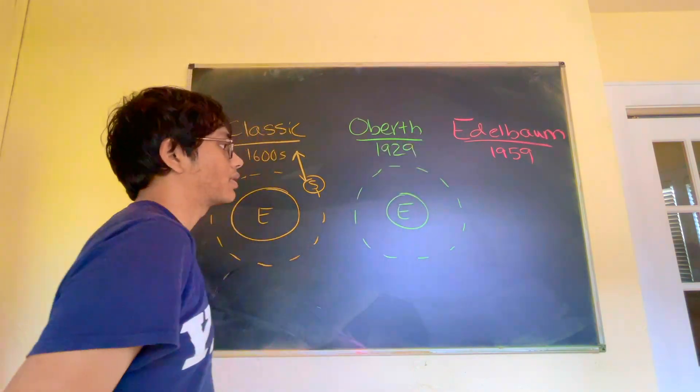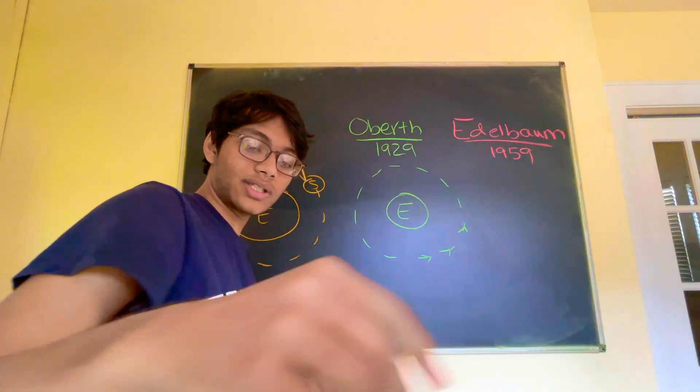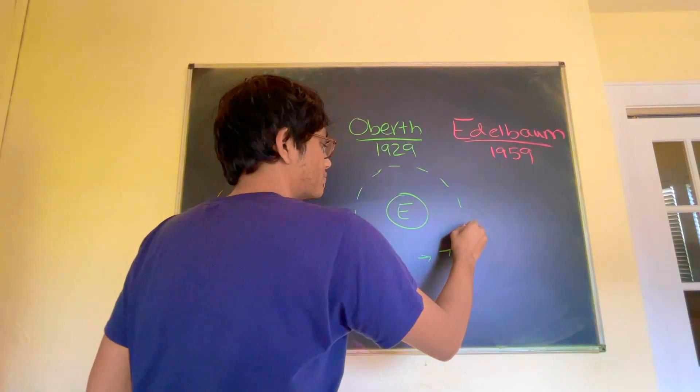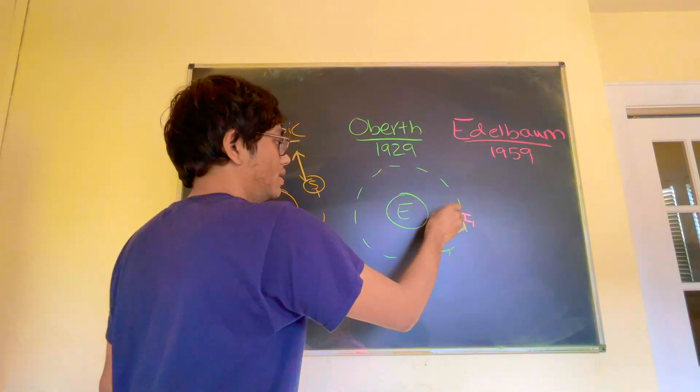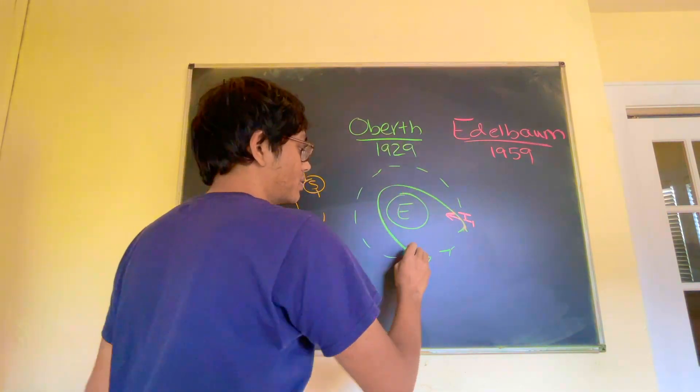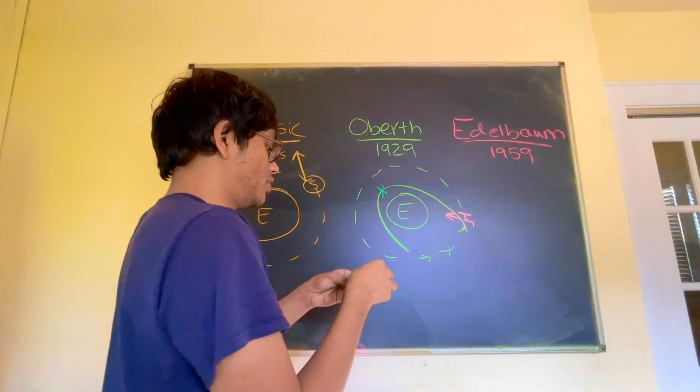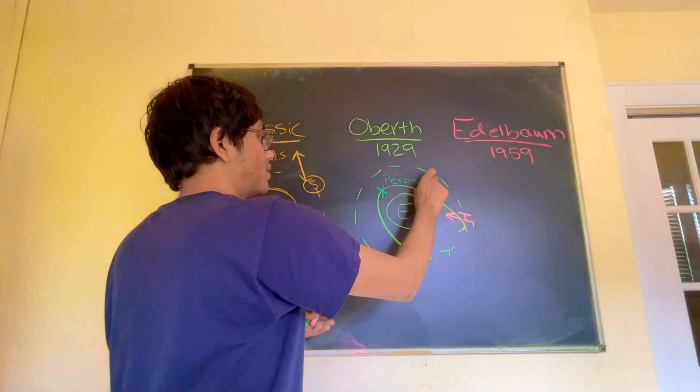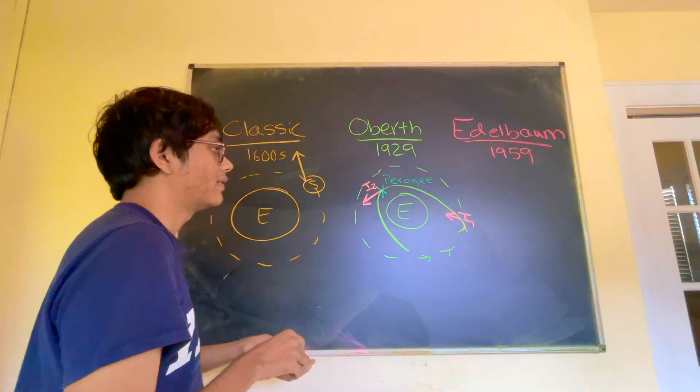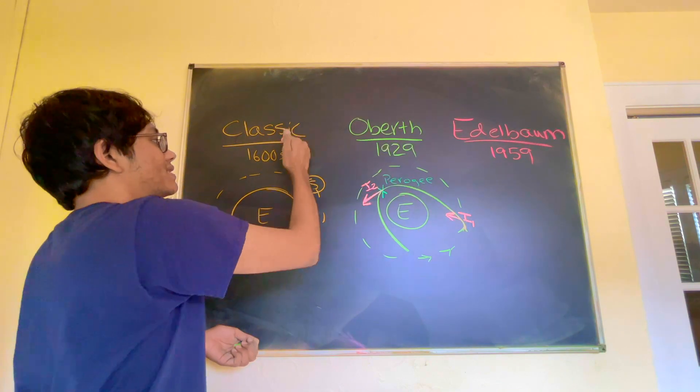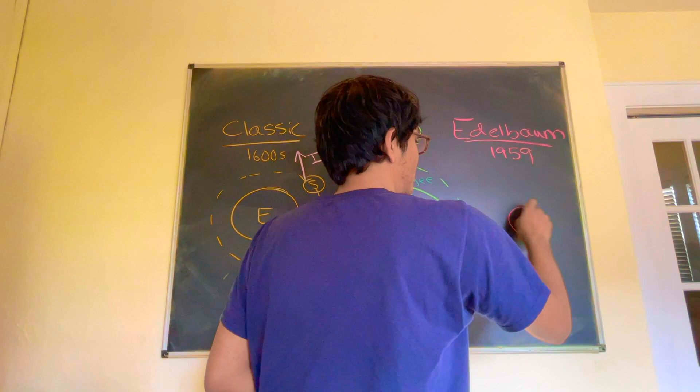Second way is the Oberth method, the two impulse maneuver. You burn once around the circular orbit. Anytime in your circular orbit, you burn once so that you can fall into the Earth's gravitational well. And once you fall in at perigee or at periapsis, you're gonna burn again. That's your second impulse. And once you make your second impulse at perigee, that's it. You're gone. You're gone into hyperbolic orbit. That is the Oberth effect. And the classical method is basically one impulse. Oberth is two impulse.